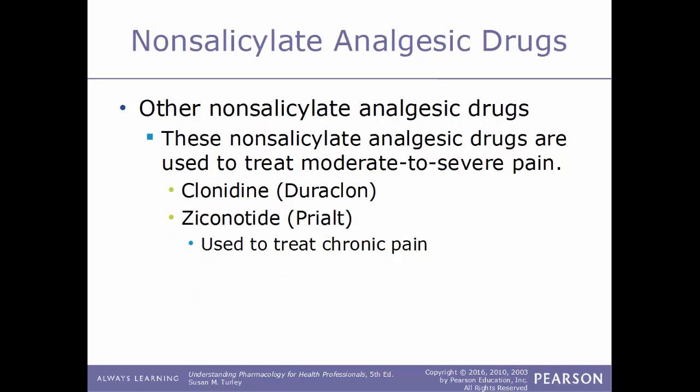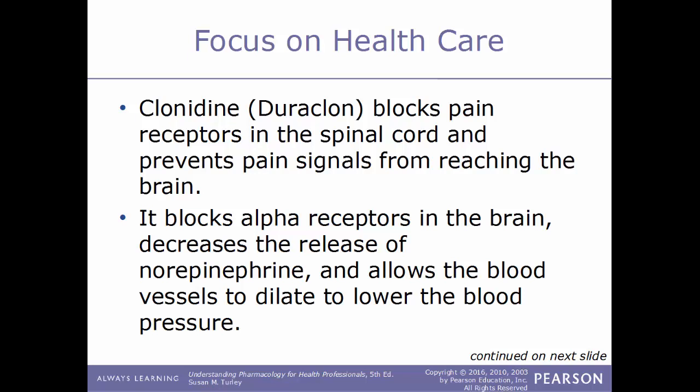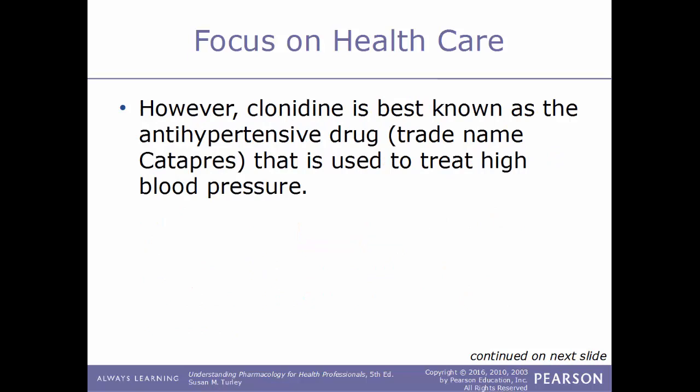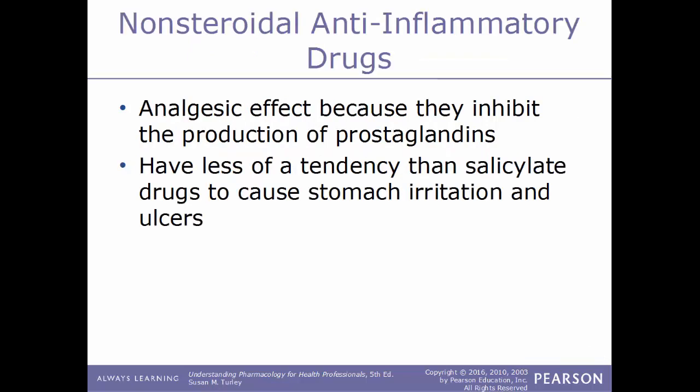Some other non-salicylate analgesic drugs are used to treat moderate to severe pain. Clonidine, sold under the trade name Duraclon, and ziconotide, sold under the trade name Prialt, used to treat chronic pain. Clonidine blocks pain receptors in the spinal cord and prevents pain signals from reaching the brain. It also blocks alpha receptors in the brain and works by decreasing the release of norepinephrine, which allows blood vessels to dilate and lowers blood pressure. However, clonidine is best known as the antihypertensive drug Catapres, used to treat high blood pressure.